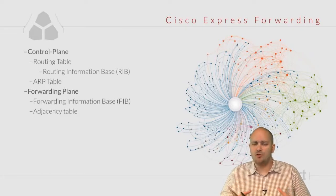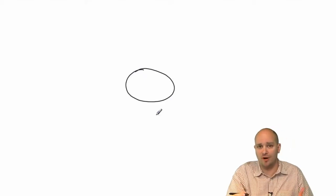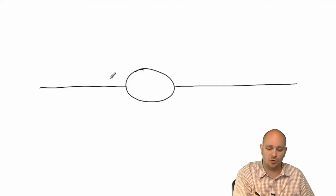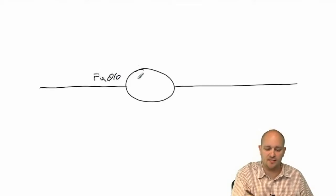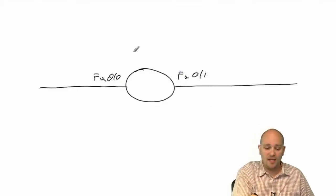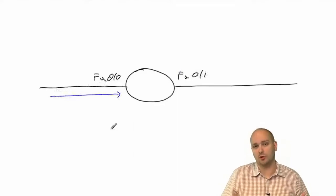Let me explain what that is using the whiteboard. Imagine a network with a multi-layer switch or router that has two interfaces: FastEthernet 0/0 and FastEthernet 0/1. We have an incoming packet — this is not a layer 2 operation, this is going to be a layer 3 routing operation.